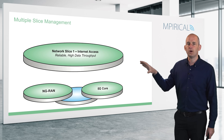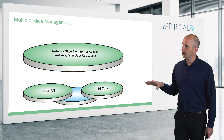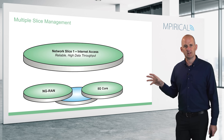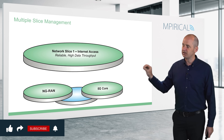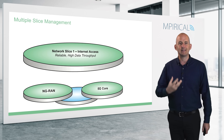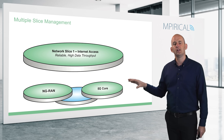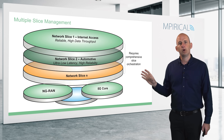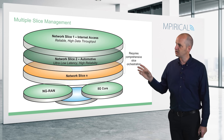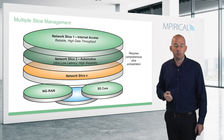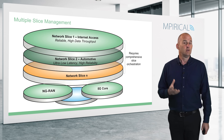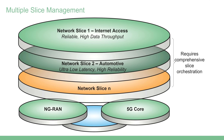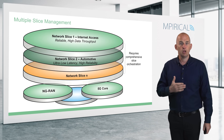Across our infrastructure — our RAN, core, and transport network — we are going to create a network slice. That network slice is logically separate from all other network slices and will support a set of attributes, qualities, and characteristics. Across our physical underlying infrastructure we could have multiple network slices deployed: one for internet access, one for automotive, and potentially hundreds of others. This would be very good news for the mobile service provider as it means lots of customers using those different network slices, but it does require very comprehensive slice orchestration.